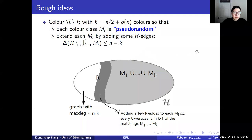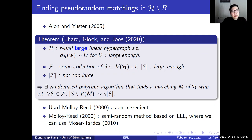Let me briefly explain what pseudorandom matchings are. The study of pseudorandom matchings was initiated by Allen and Böttcher. And very recently, Ehard, Glock, and Joos were able to strengthen their result in a quantitative way.